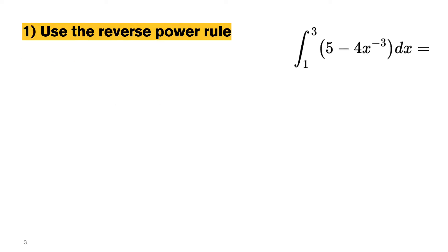So the first step that we're going to want to take here is to use the reverse power rule, which is that the integral of some function x to the nth power dx is going to be equal to x to the n plus 1 power over n plus 1. So then our integral over here on the right, we can rewrite our function as 5 times x to the 0 because x to the 0 is just 1 minus 4 times x to the negative 3.